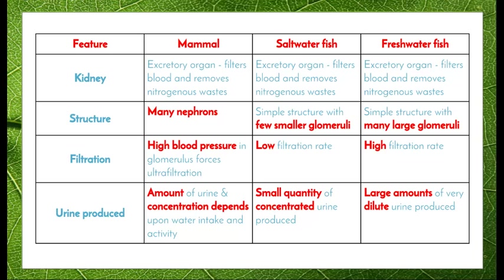In freshwater fish, the kidneys are also an excretory organ that filters blood and removes nitrogenous waste. They have a simple structure but with many large glomeruli. Filtration occurs at a much higher rate in freshwater fish than in saltwater fish, because of the high volume of water that needs to be removed.